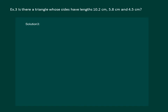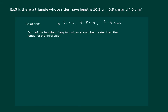Let us read the question: Is there a triangle whose sides have lengths 10.2 cm, 5.8 cm, and 4.5 cm? Let us assume such a triangle is possible. Then the sum of the lengths of any two sides should be greater than the third side. If we add 4.5 cm plus 5.8 cm, it comes out to be 10.3 cm, which is greater than the third side — so yes, such a triangle is possible for this combination.